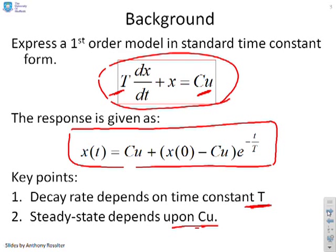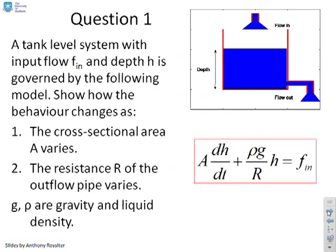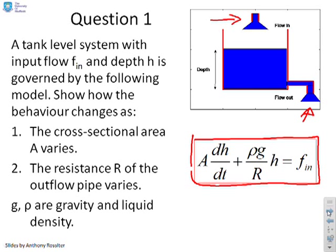The first question is based on a tank system. It's a standard tank system with some flow in and some flow out, and the depth depends upon the relative values. Here's a typical model: A dh/dt + (ρg/r)h = F_in, where ρg/r times h represents the flow out. ρ and g are the liquid density and acceleration due to gravity, and r represents the resistance to flow of the outflow pipe. The question is: how does the behaviour vary as we change the cross-sectional area A, and as we change the resistance r of the outflow pipe?